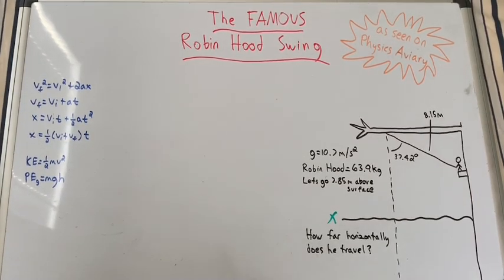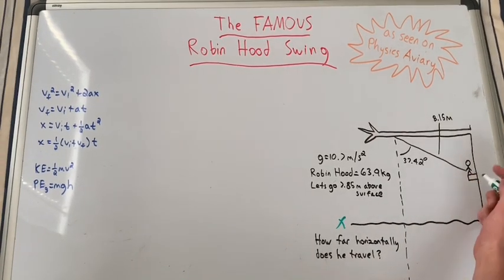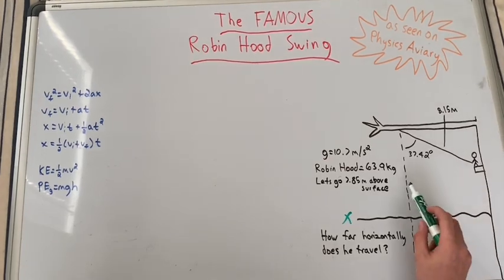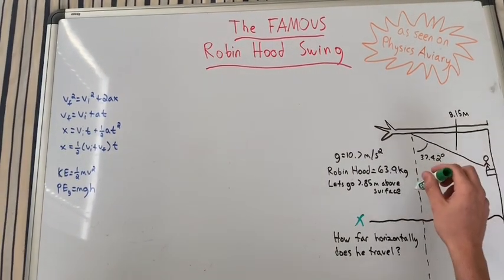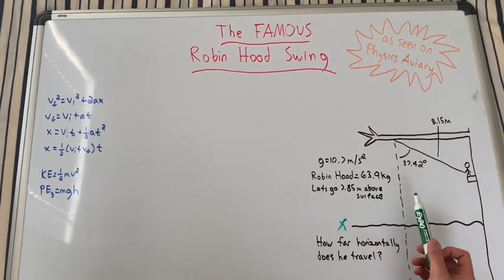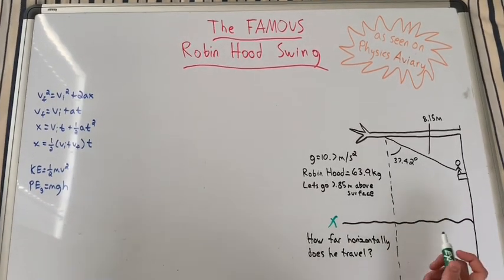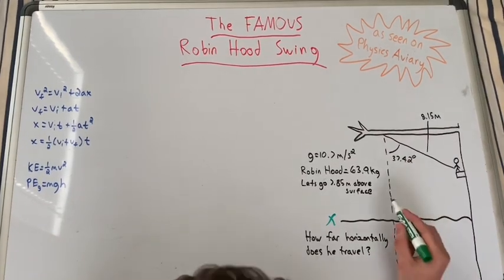What's basically happening is Robin Hood has some potential energy stored over here. When he reaches the bottom of his swing, which is acting in a pendulum manner, all his potential energy is going to be converted into kinetic energy. We're going to use the kinetic energy formula to find the velocity. So what we have to do first is establish the change in height to determine the potential energy.